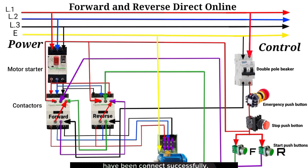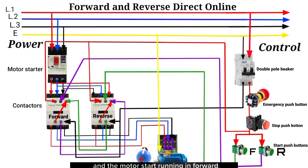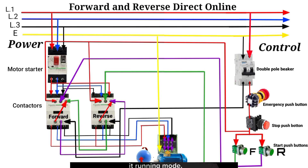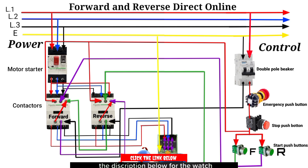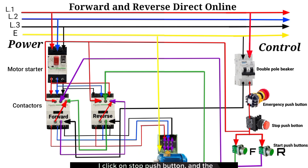With these steps, the wiring connections have been completed successfully. Now let's try out the simulator. I click the forward start push button and the motor starts running in forward mode. I click the reverse start push button and the motor does not stop or change its running mode. This happens because the forward and reverse contactors are interlocked, meaning they cannot both run at the same time.